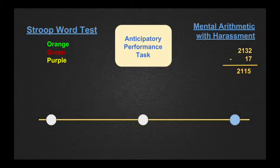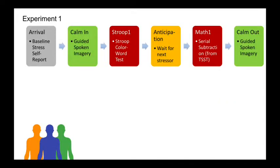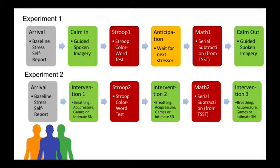If they took too long or made a mistake, they had to start over. Phase 1 consists of six stages: arrival, calming, Stroop test, wait, math test, and calming. In phase 2, the same participants completed the same stages but experienced three of the four interventions.